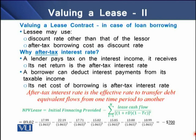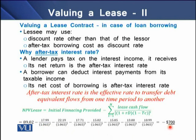The after-tax interest rate is the effective rate to transfer debt-equivalent flows from one time period to another. To equalize a debt amount under a borrowing contract, we need to use the after-tax discount rate to determine the present value of each period covered under the contract. On the screen, we have used 6.5% as the after-tax discount rate, and it gives a net present value of minus $700 to the lessee, meaning borrowing is more expensive than leasing in this case.